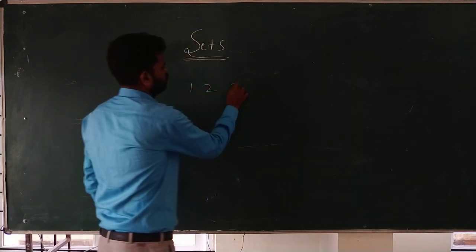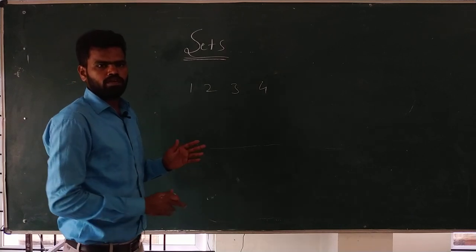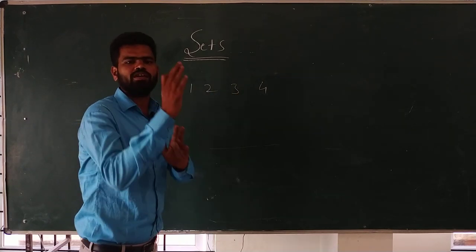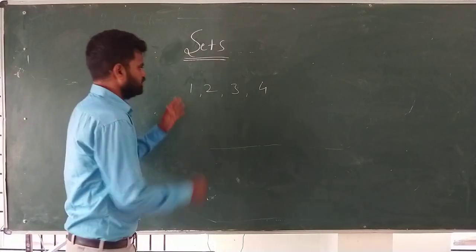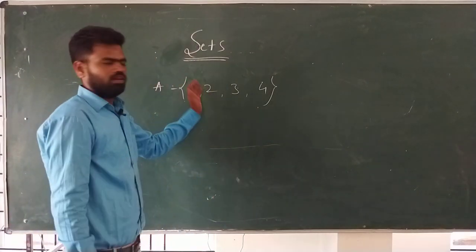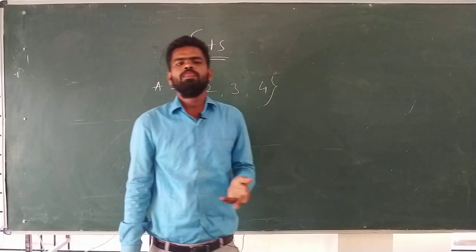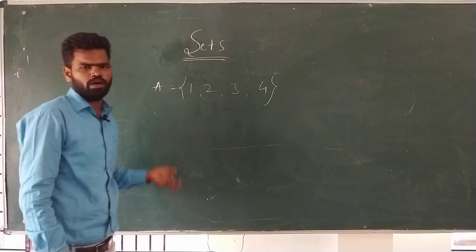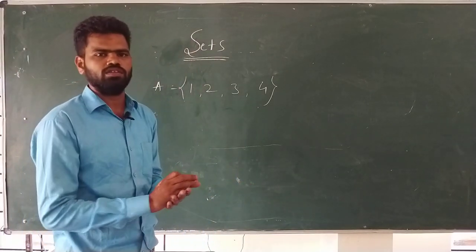For example, numbers like one, two, three, four — these are natural numbers. These numbers can be arranged in a systematic order, written with commas in between two curly brackets, and denoted by a capital letter alphabet. So a set is nothing but a well-defined collection of objects or elements, written in systematic order and denoted by capital letters A, B, C, up to Z.